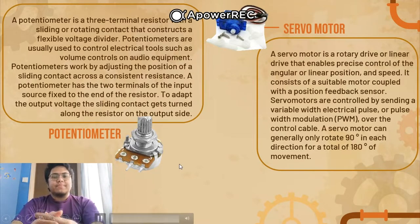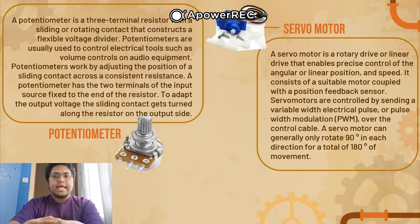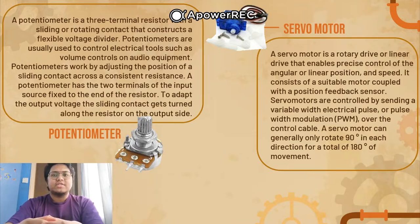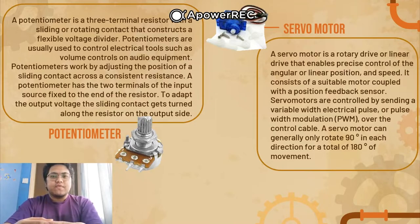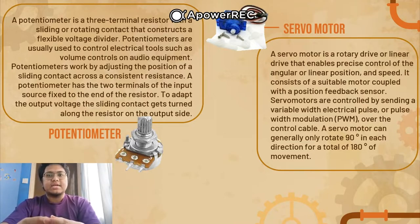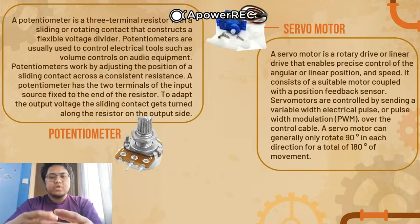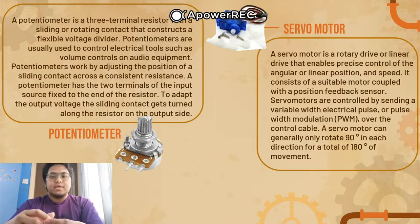Next is the potentiometer — a three-terminal resistor with a sliding or rotating contact that constructs a flexible voltage divider. Potentiometers are usually used to control electrical tools such as volume controls on audio equipment. It works by adjusting the position of a sliding contact across a consistent resistance. It has two terminals of the source fixed at the ends of the resistor to adapt the output voltage, and the sliding contact is essentially used to turn a current device on or off.